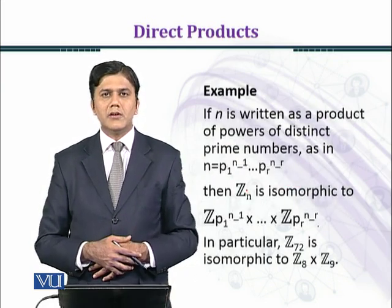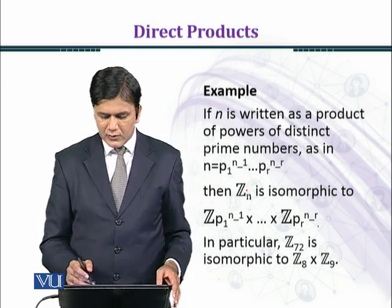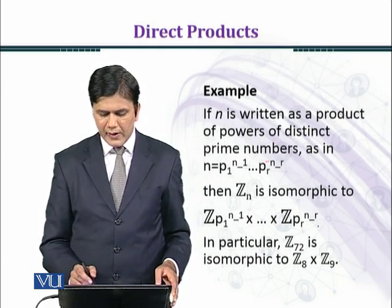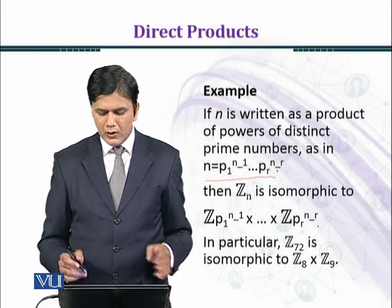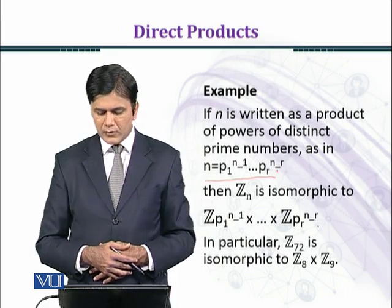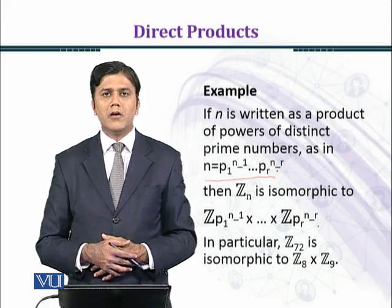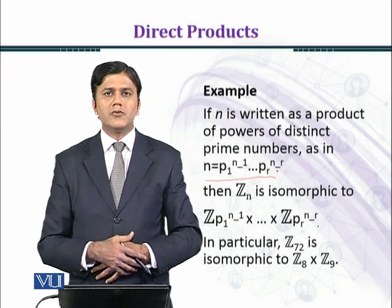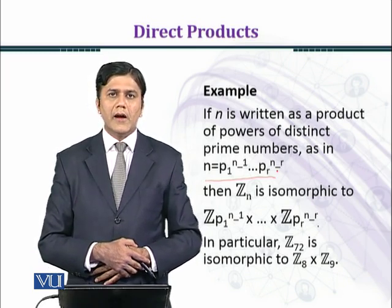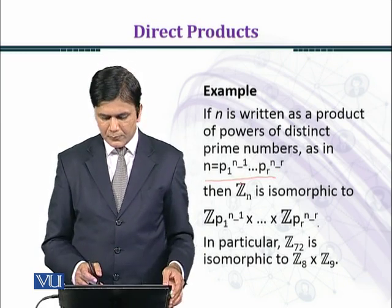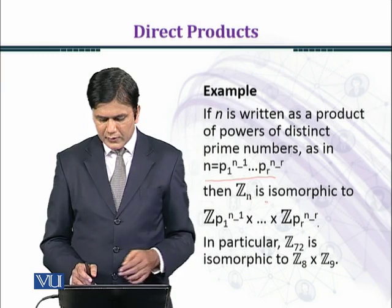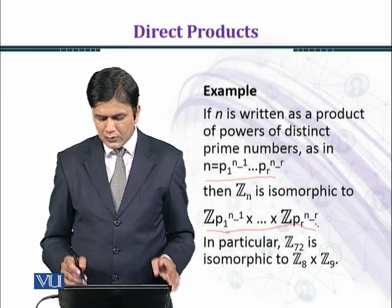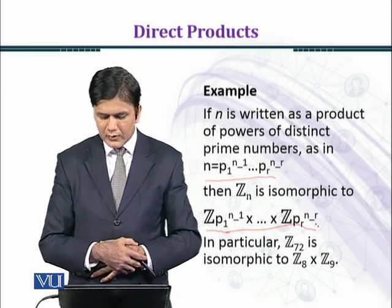Now let's consider an example. If n is written as a product of powers of distinct prime numbers, as in n = p1^n1 · p2^n2 · ... · pr^nr, then Z_n is isomorphic to Z_(p1^n1) × Z_(p2^n2) × ... × Z_(pr^nr).